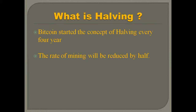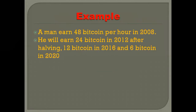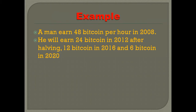To understand the concept of halving, let us see an example. Suppose a miner earned 48 Bitcoin per hour in 2008. After four years, in 2012, after the halving event occurred, his rate of earning Bitcoin was reduced to 24 Bitcoin. Further, after four years in 2016, his rate of earning Bitcoin was reduced to 12. And in 2020, his Bitcoin earning was reduced to 6. So this is the concept of halving — the reduction in the rate of mining or earning Bitcoin per hour.